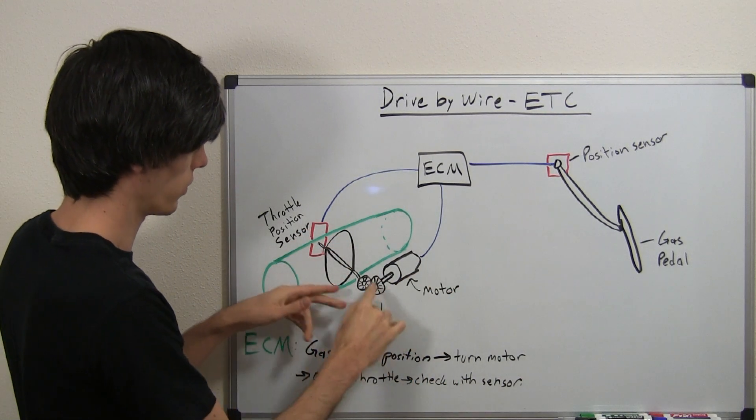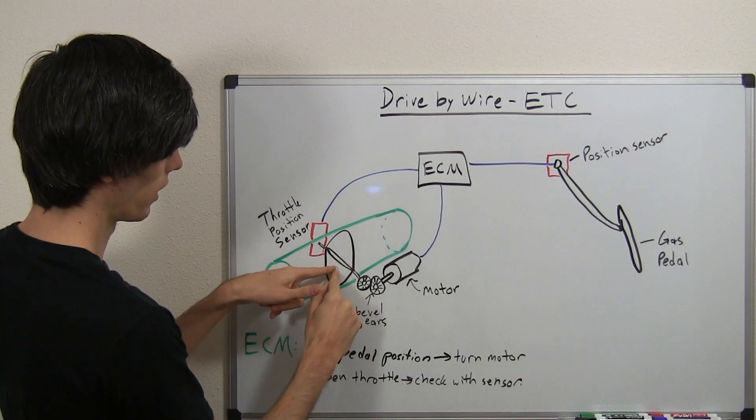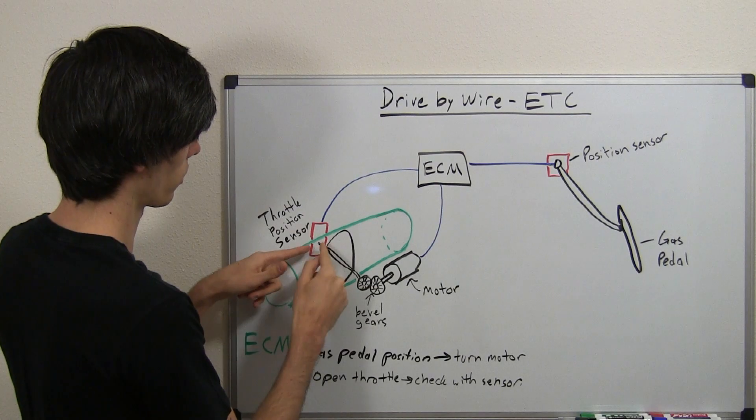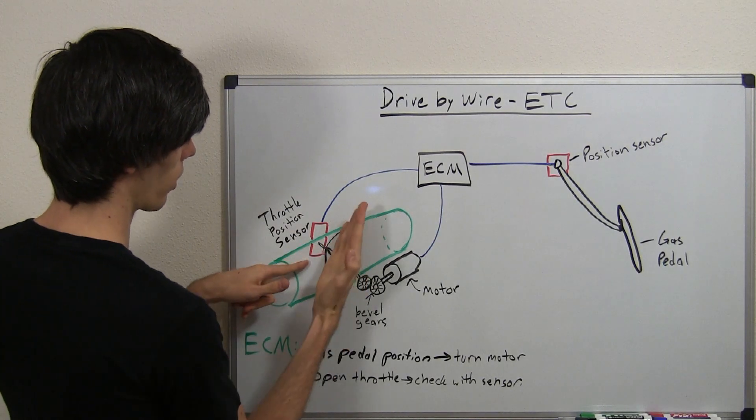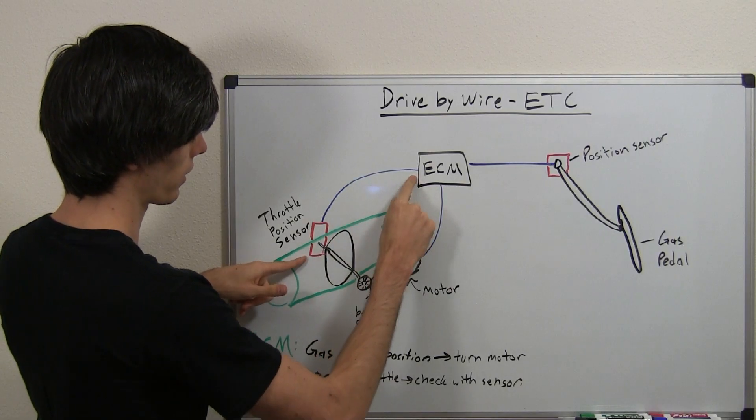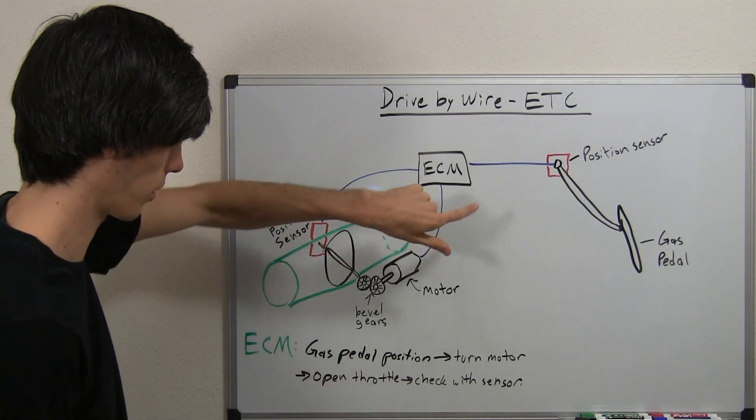So anyways, this motor will rotate and it will open or close this butterfly valve. Then, you're going to send that signal, there's going to be a position sensor of this throttle body, or this butterfly valve, and that will go back to the engine control module, part of the ECU.